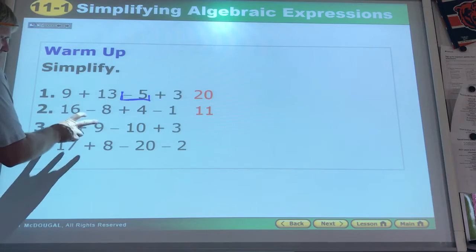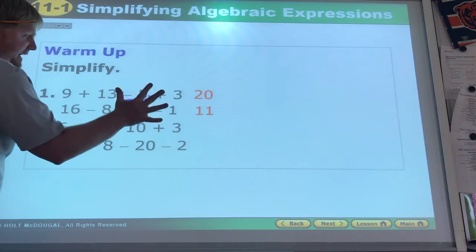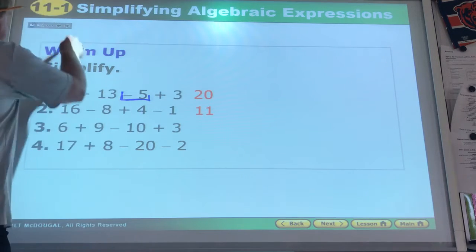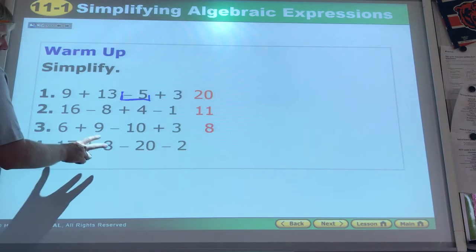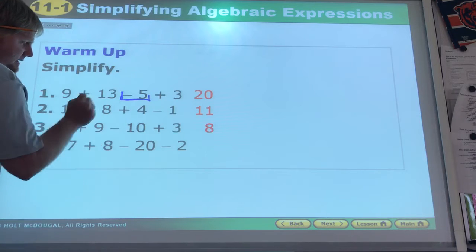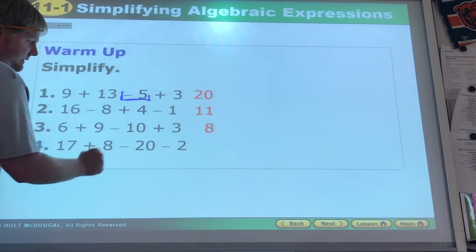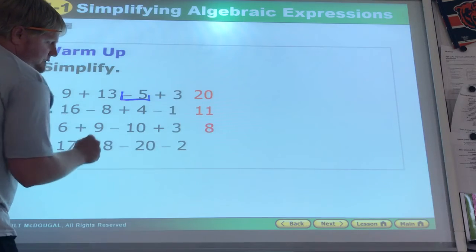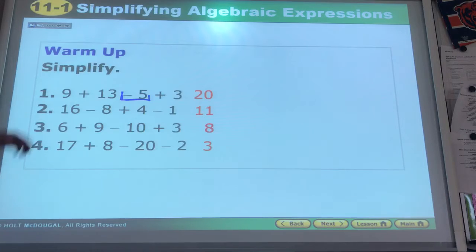6 and 9 make 15. Positive 15 negative 10 make 5. 5 positive 3 positive makes 8. 17 positive 8 positive makes 25 positive. 25 positive negative 20 makes 5. 5 positive negative 2 makes 3. And we've got our answers.